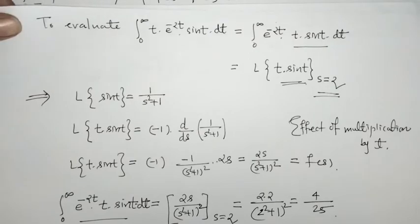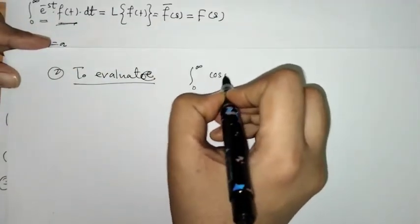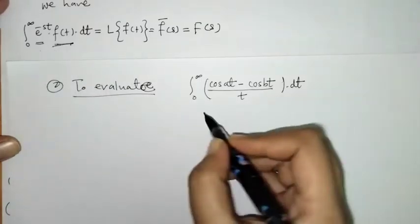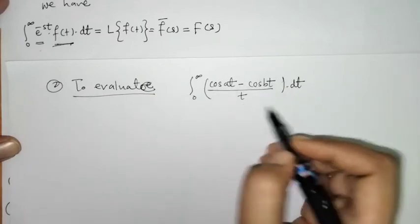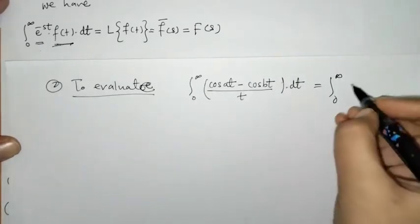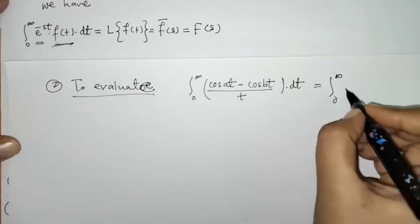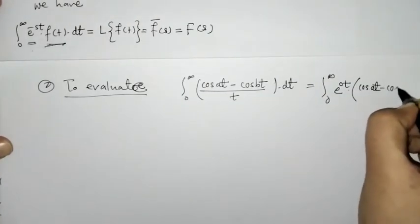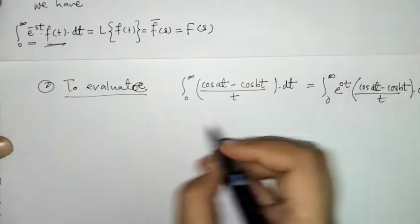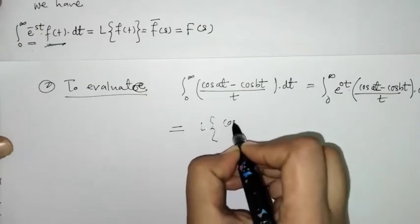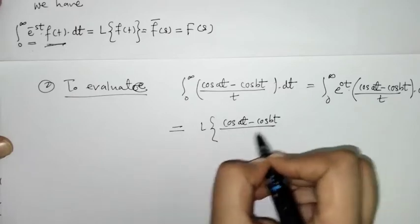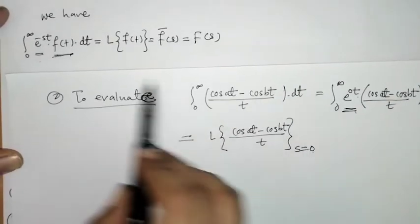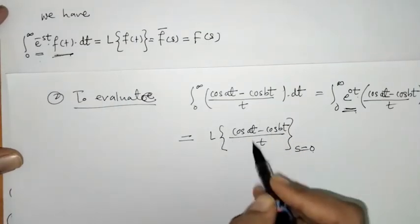Let's try another example. We have to evaluate this integral. Comparing with the Laplace definition, we identify f of t. Here we don't have e raised to minus st, so we can write this as e raised to 0 times t, and f of t is as it is. That means we have to find the Laplace of cos(at) minus cos(bt) divided by t, and we have to put s equals 0, by comparing with the definition of Laplace.